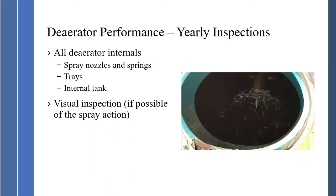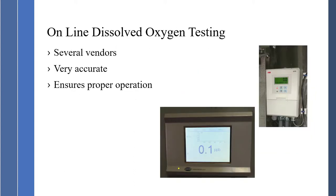Another method is online dissolved oxygen testing, which is a great device to have on deaerators. There are several vendors and they are very accurate, ensuring proper operation of the deaerator. These give us a real-time measurement of dissolved oxygen — this one is running at 0.1 parts per billion, which is outstanding, and this one is going through calibration measuring zero.